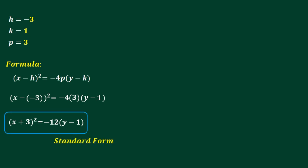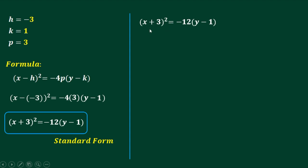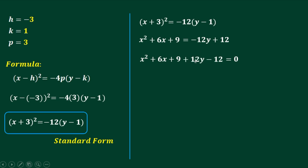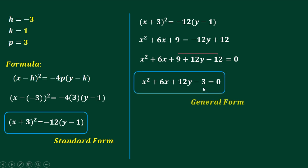To solve for the general form, we expand the equation. For (x + 3) squared, using the shortcut SMS method: the square of x is x squared, the product 2 times x times 3 is 6x, and the square of 3 is 9. On the right side, apply the distributive property to get -12y + 12. Equating to 0 by transposing: -12y becomes +12y and +12 becomes -12. Combining like terms, 9 minus 12 gives -3. So the general form is x² + 6x + 12y - 3 = 0.